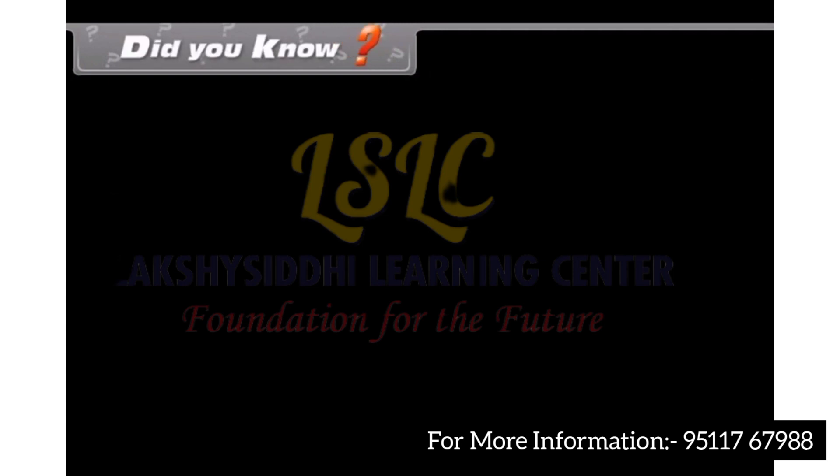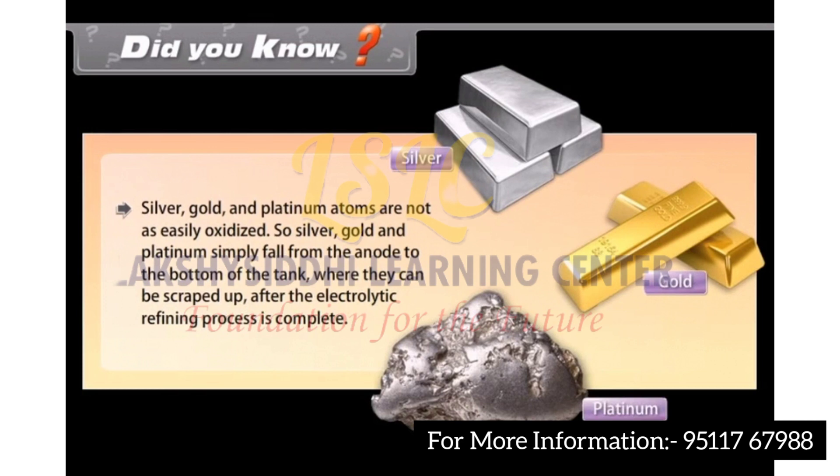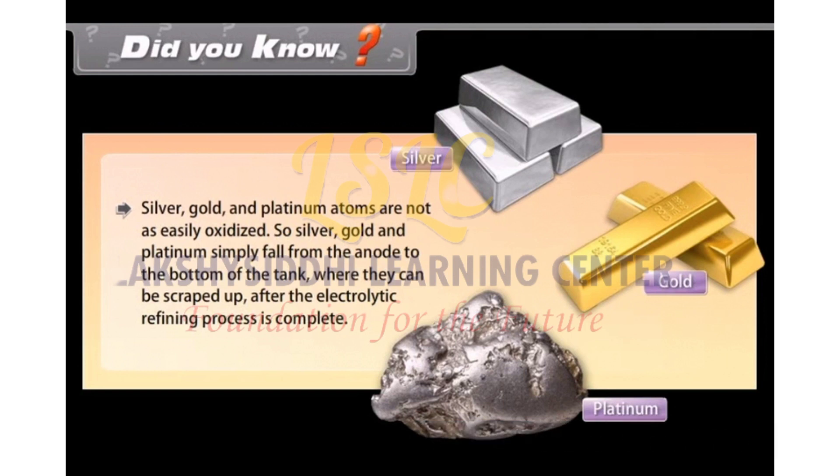Did you know? Silver, gold and platinum atoms are not easily oxidized. So silver, gold and platinum simply fall from the anode to the bottom of the tank where they can be scrapped up after the electrolytic refining process is complete.